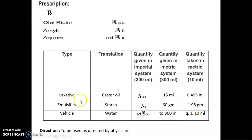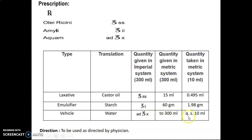The formula table: castor oil is used as a laxative; quantity given in imperial system is ounce ss (half ounce = 15 ml), which equals 0.495 ml required to prepare 10 ml using the factor. Starch is used as an emulsifier; ounce ii means 2 ounces = 60 grams (quantity for 300 ml), so 1.98 grams is taken to prepare 10 ml. Water is used as a vehicle; add ounce x (30 × 10 = 300 ml), making up to 10 ml quantity sufficient. Direction: to be used as directed by physician.